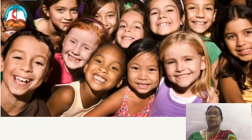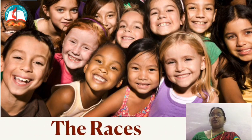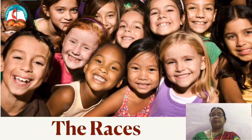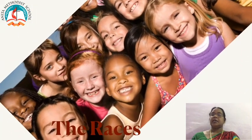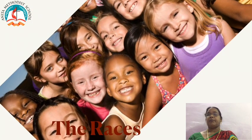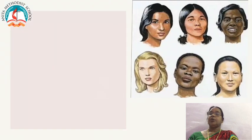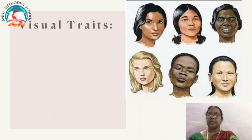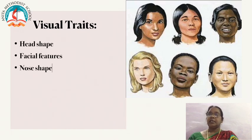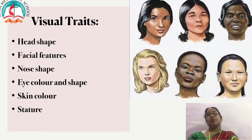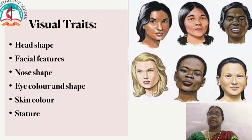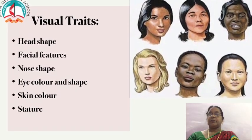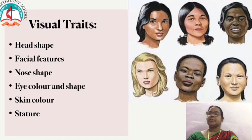Now I will revise about races. Biological grouping within the human species is called a race. A race is a group of people with more or less permanent distinguishing characters that are inherited from their parents. Human racial types are mostly based on visual traits — that is, what we see. The visual traits are head shape, facial features, nose shape, eye color and shape, skin color, and stature.